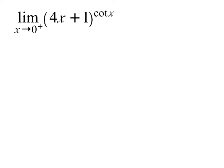This is the first problem we're going to use as an example. Notice what happens if I plug 0 in for x — I'd end up getting 1 to the power of infinity. That's one of our indeterminate powers, and so that tells me that I'm going to have to use some sort of a different method.